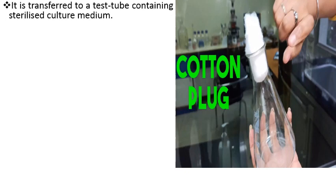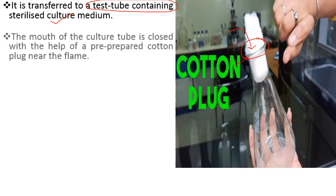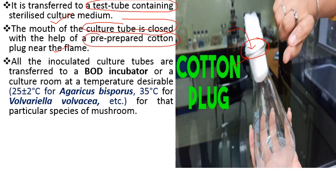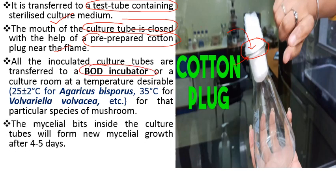The next step is transfer of this tissue to a test tube or conical flask containing sterilized culture medium. The tissue is placed so that it does not touch the mouth of the tube, using an inoculation needle. The mouth is kept near the spirit lamp flame to avoid surface contamination. The mouth of the culture tube or conical flask is closed with a pre-prepared cotton plug near the flame. All inoculated culture tubes are transferred to a BOD incubator or culture room where temperature is fixed as per the requirement of the particular mushroom.